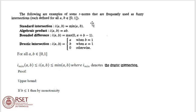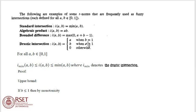Examples of some T-norms: standard intersection I(A,B) = minimum of A and B; algebraic product I(A,B) = A times B; bounded difference I(A,B) = maximum of 0 and (A + B minus 1); drastic intersection I(A,B) = A when B = 1, B when A = 1, and 0 otherwise.